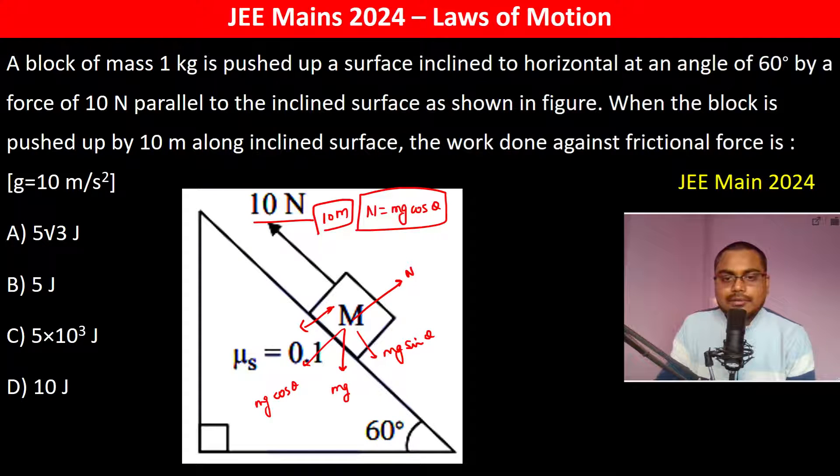So now we have friction equal to μ into N. Since it's moving, it is going to be kinetic friction and it is going to be constant. So 0.1 into mg cos theta.